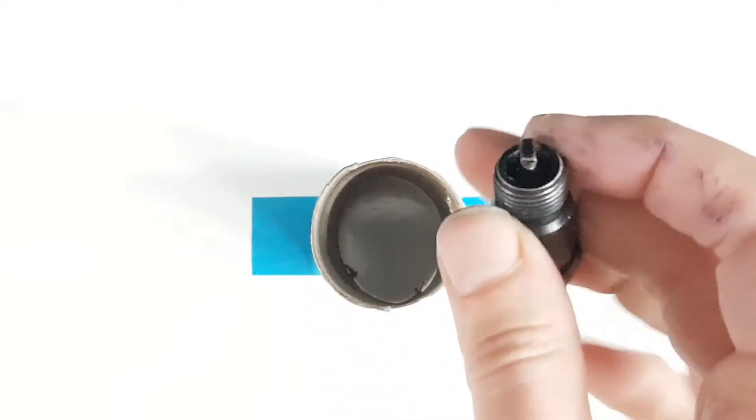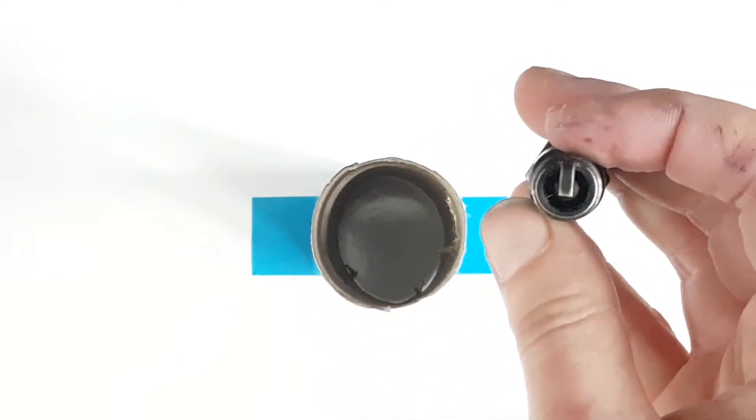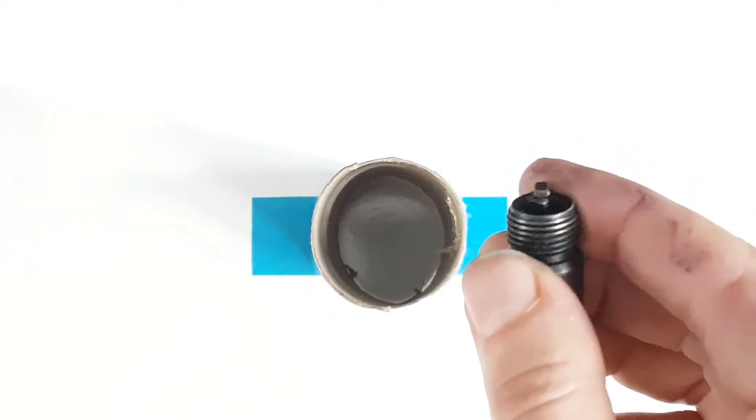Rounding a spark plug is to do with how the tip is shaped. Normally when you buy a spark plug it will be squared.